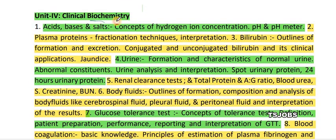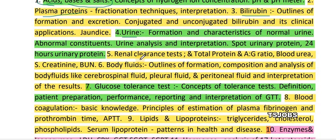The fourth unit is clinical biochemistry. The first topic is acids, bases, and salts. The second is plasma proteins. The third is bilirubin and bilirubin in blood. Also included are urine-related questions, renal clearance test, total protein, albumin-to-globulin ratio, blood urea, creatinine, and blood fluids.